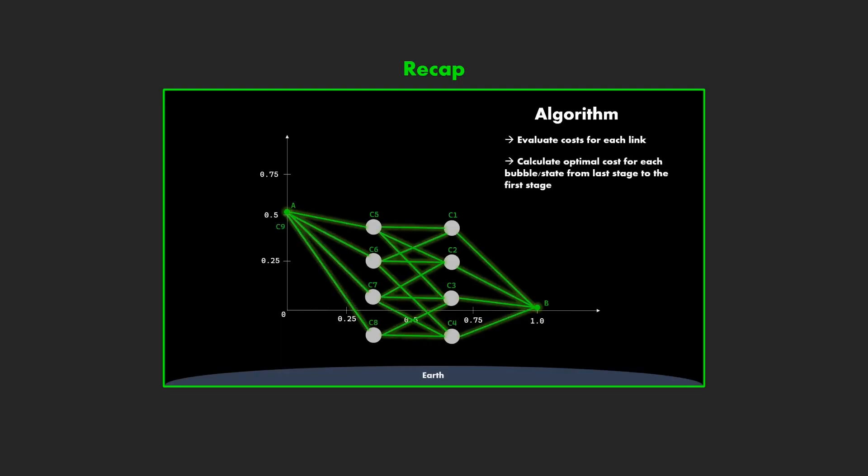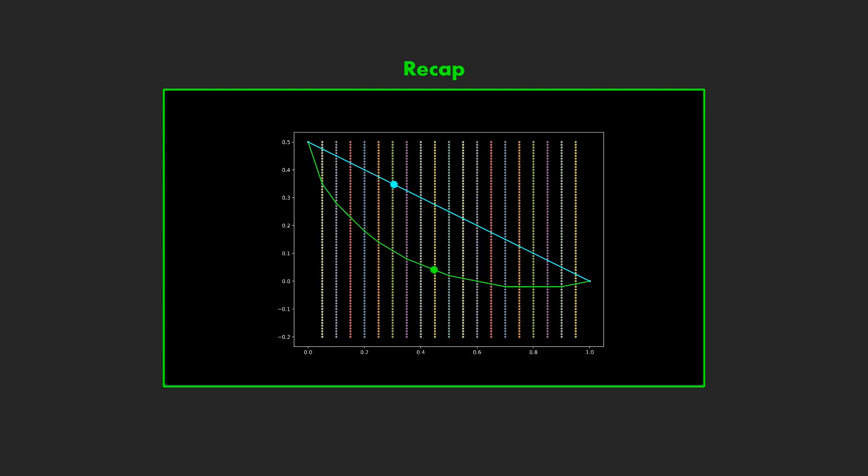In the last video we solved the brachistochrone problem using numerical dynamic programming. In this video we will use the same algorithm to determine the optimal racing line for a Formula One car.